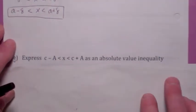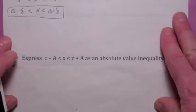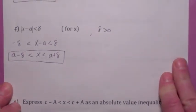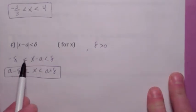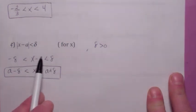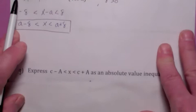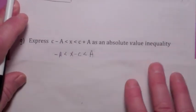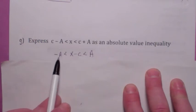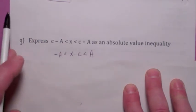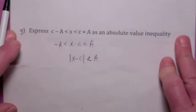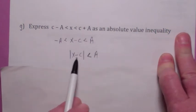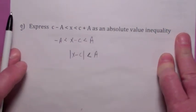If you're given a double inequality, how would you write this as an absolute value inequality? In order to do that, you want to have the same number on both sides — one of them negative, one of them positive — so it fits the form. So what you would do in this case is subtract c from all three things. Then it fits the form. You could say if this expression is between negative a and a, then the absolute value of the expression is less than a.